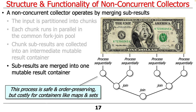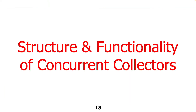One nice thing about this approach is it's order-preserving, so you can have things that preserve encounter order. However, it's relatively costly for containers like maps and sets where merging is expensive. In contrast, merging two lists together is very fast — you just take list A and stick list B at the end of it, which can be very efficient, especially for linked lists where it's just a matter of adjusting a pointer. For maps and sets, there could be more overhead.